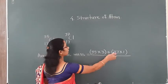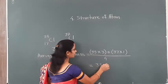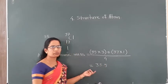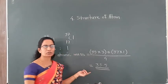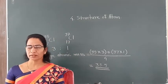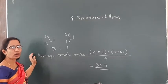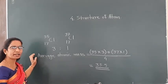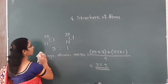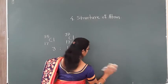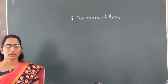If you do this calculation, you will get the final answer as 35.5. So 35.5 is the average atomic mass of the chlorine atom. In this way, you can easily find the average atomic masses of atoms that exist as isotopes. The details about this you have already studied in the first chapter.